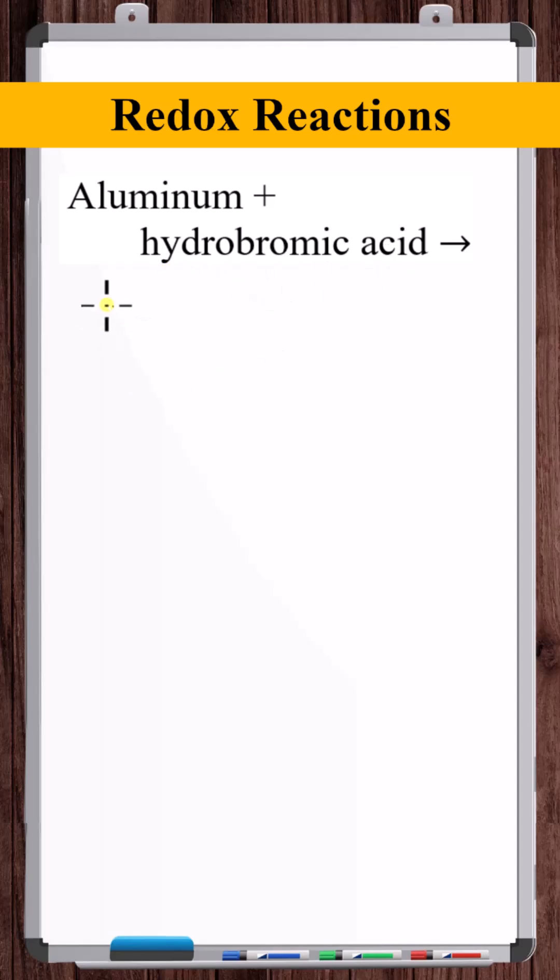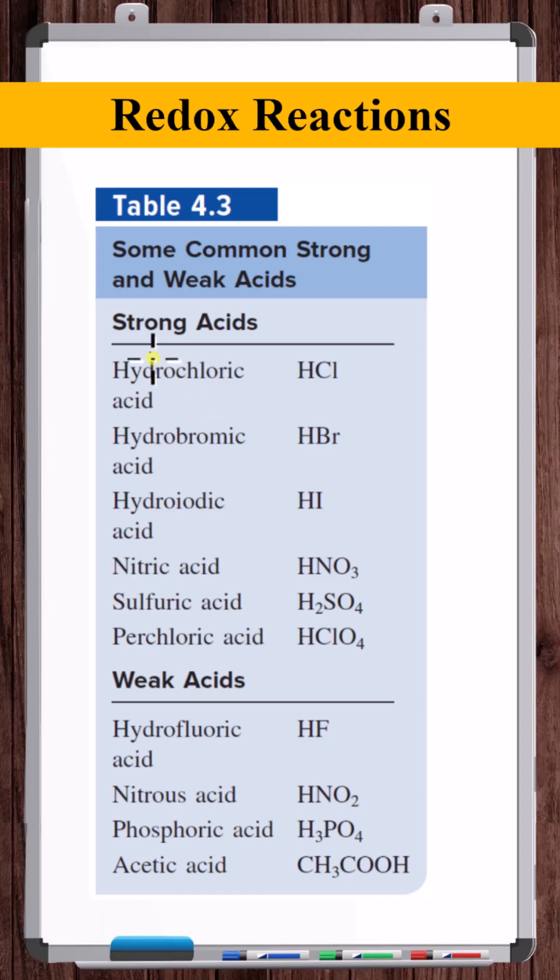So initially, what we have is solid aluminum and hydrobromic acid, HBr. And if we come to our acid chart, hydrobromic acid is a strong acid.